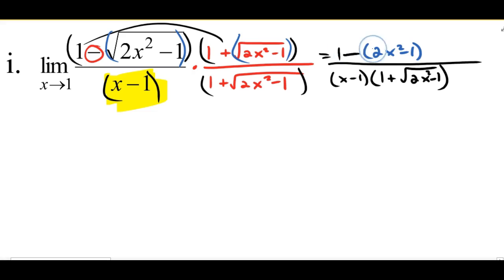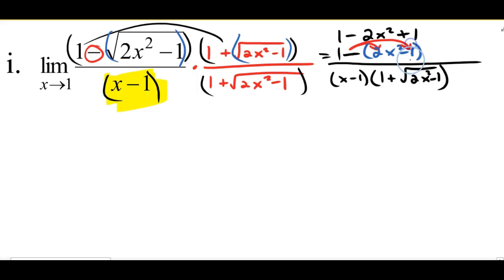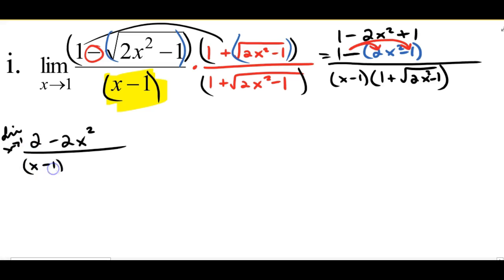Simplifying the numerator: 1 minus 2X squared plus 1. Distributing the negative: minus 2X squared and positive 1. I can rewrite that as 2 minus 2X squared, over the denominator X minus 1 times the quantity 1 plus radical 2X squared minus 1. I still can't cancel the X minus 1, but I do see in the numerator I could factor 2 out, giving me 2 times the quantity 1 minus X².